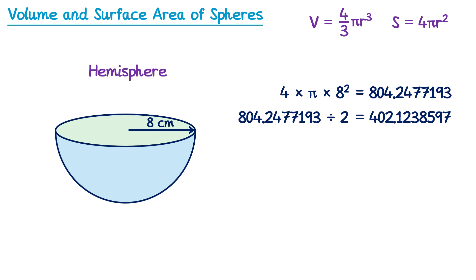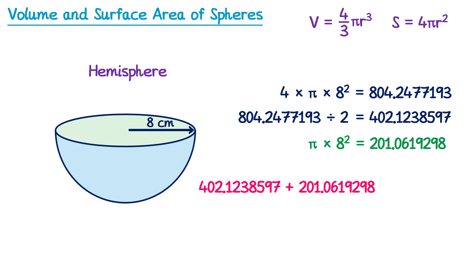To find the area of the circular face, we use π r², so π times 8 squared. We've now worked out the blue area (curved surface) and the green area (circular face). To get the total surface area, we add those together: half the sphere's surface area plus the circular face area. Adding these two values gives a result which, rounded to one decimal place, is 603.2 centimeters squared.